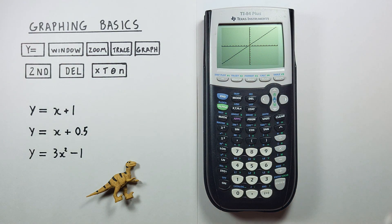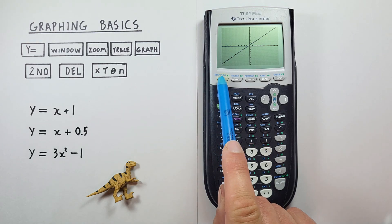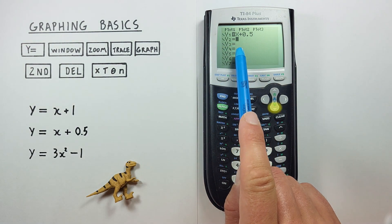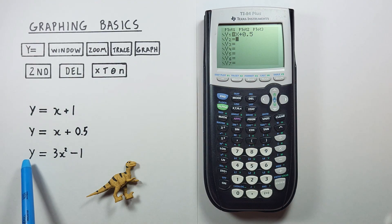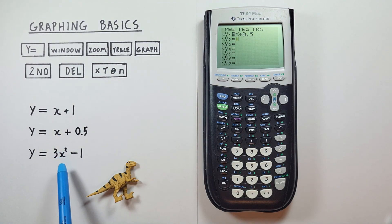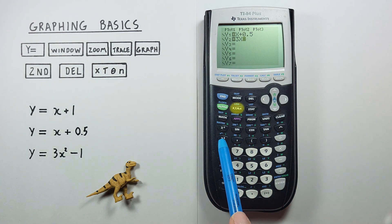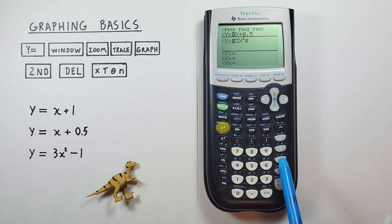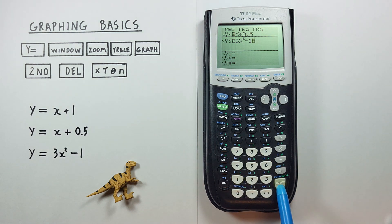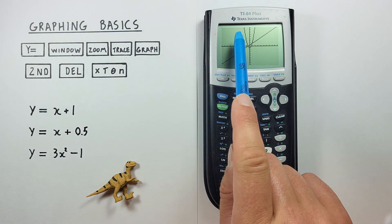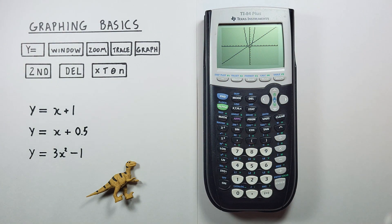Let's go back and add a second function. We go to Y=, scroll to Y2, and let's enter y equals 3x squared minus 1. So we go 3x squared minus 1 and hit enter. Now if we hit graph, we see we have both functions on our screen.